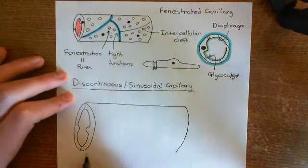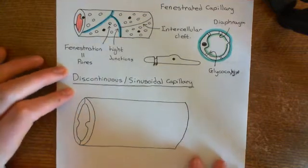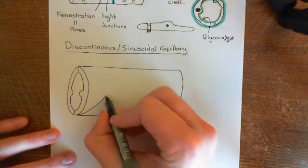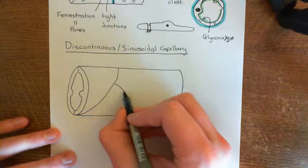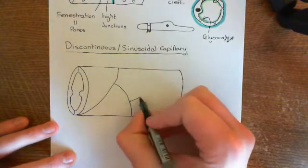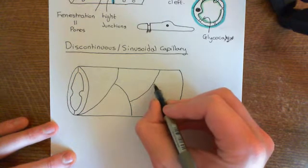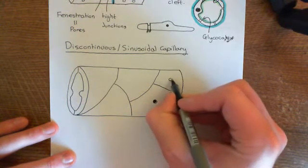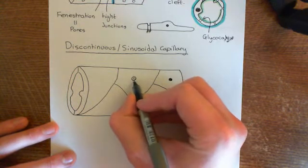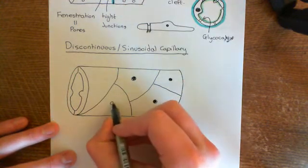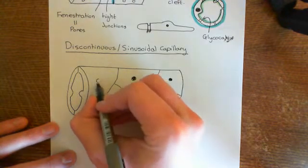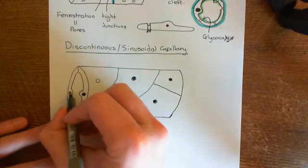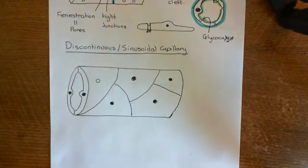The huge difference between these cells and the continuous capillaries is that these are going to be discontinuous. So here's one endothelial cell joined to another endothelial cell. These discontinuous or sinusoidal capillaries have hardly any tight junctions. The cells have a huge number of intercellular clefts between them and not many tight junctions, which is why this type of capillary is known as a discontinuous capillary — because the endothelium isn't one continuous layer.